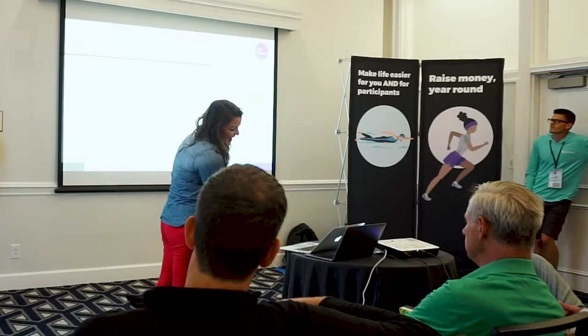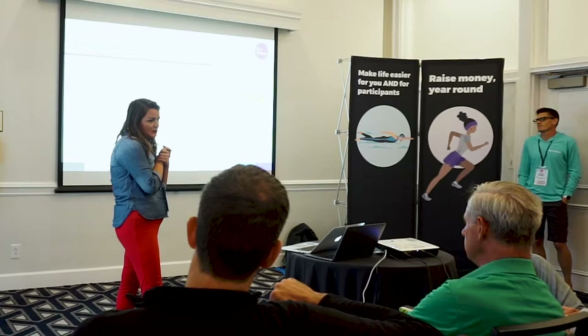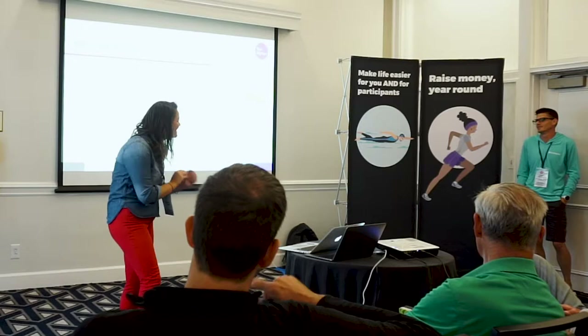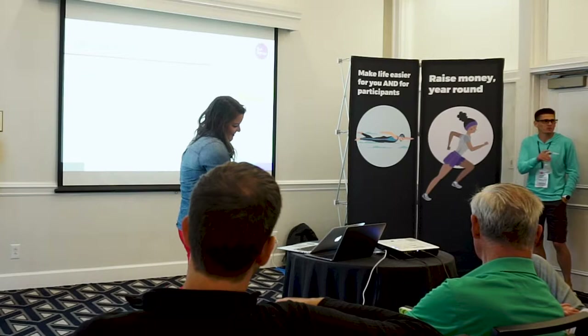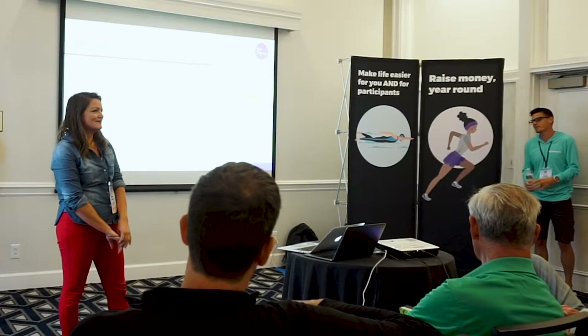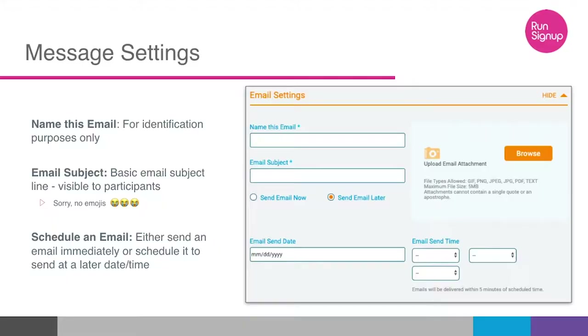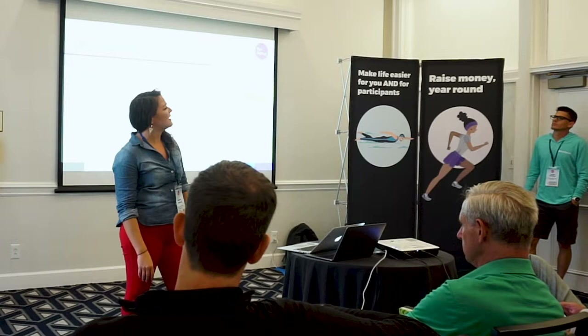We cannot have emojis in subject lines — that has been requested before. Also, don't use all caps or exclamation points, as these tend to be typical spam email characteristics. We also have scheduling options: if you know you want to send a bib email the week before the race, you can craft the email, get everything ready, and schedule it to send whenever you'd like.